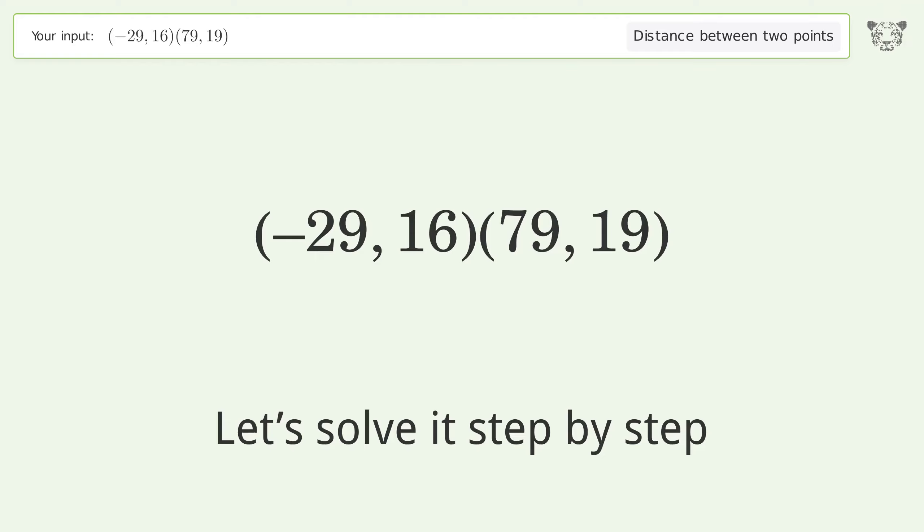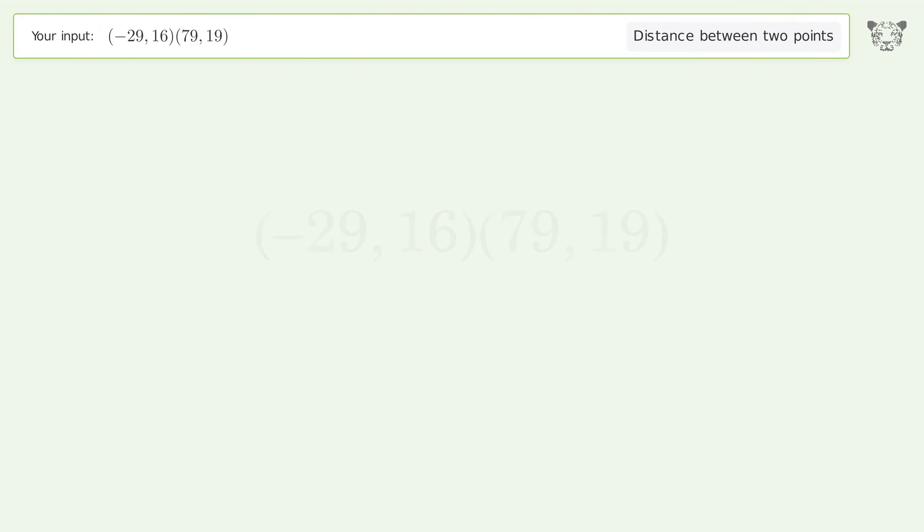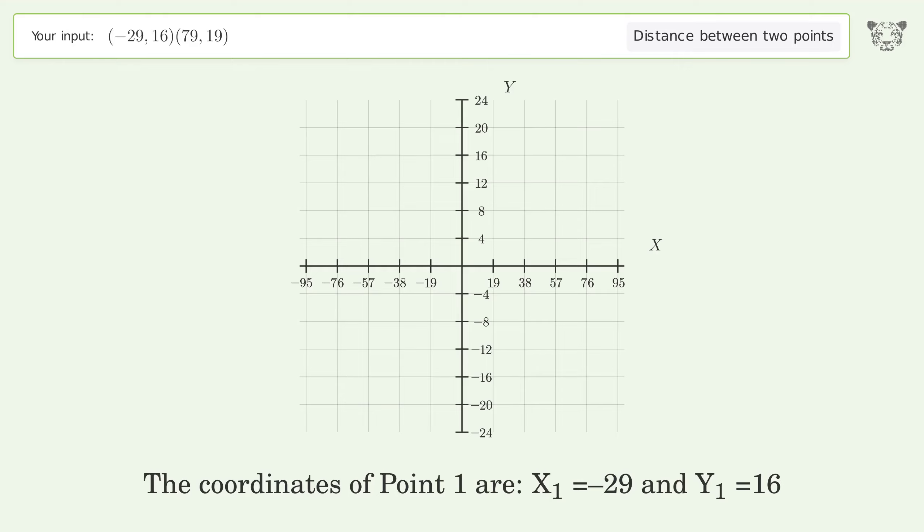Let's solve it step by step. Plot the two points and calculate the distance using the formula. The coordinates of Point 1 are x1 equals negative 29 and y1 equals 16. The coordinates of Point 2 are x2 equals 79 and y2 equals 19.